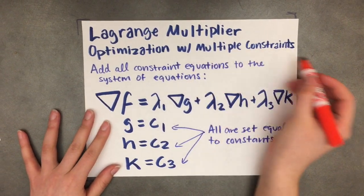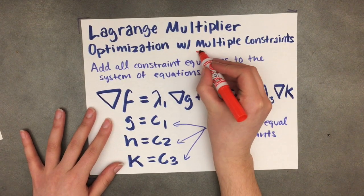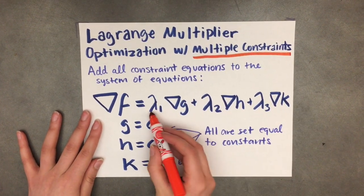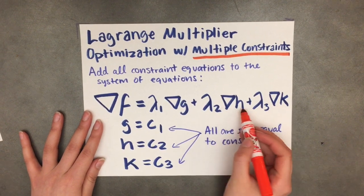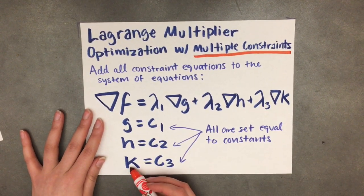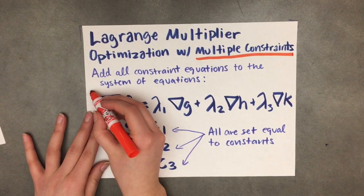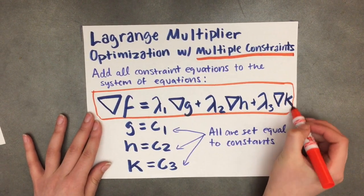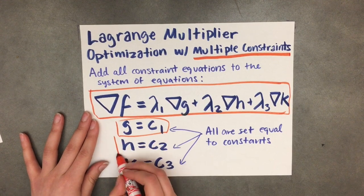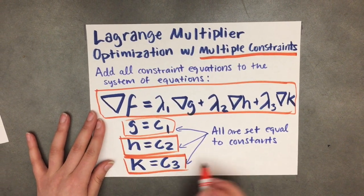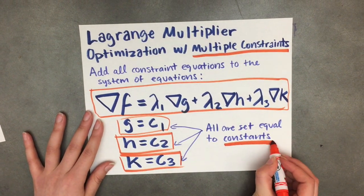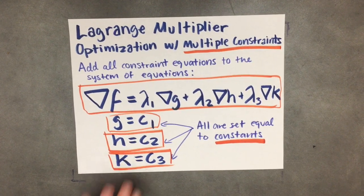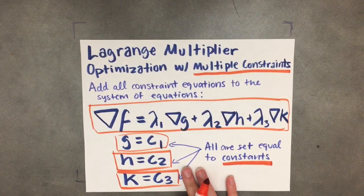Now we're going to look at Lagrange multiplier optimization with multiple constraints. All of the constraint equations are added to the system of equations. The main equation states that the gradient of the function you want to optimize is proportional to the gradients of all the constraint functions, and all constraint functions are set equal to constants. There is an additional unique Lagrange multiplier for every constraint function that you add.